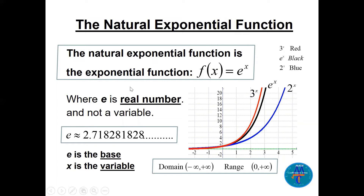Now let's look at the natural exponential function. The natural exponential function is an exponential function where the base is e, so we have f(x) = e^x. I will graph e^x in black and compare it with 3^x and 2^x. As we increase the base, the graph will be closer to the y-axis. The base 3 is bigger than e, and the base 2 is less than e. The domain is (−∞, +∞) and the range is (0, +∞) without shifting.